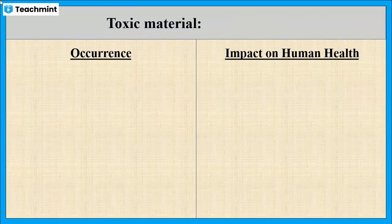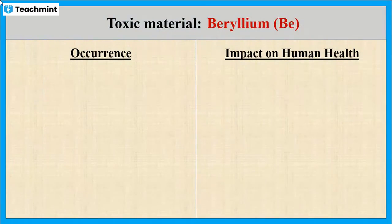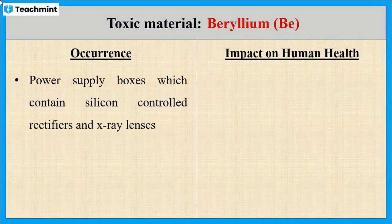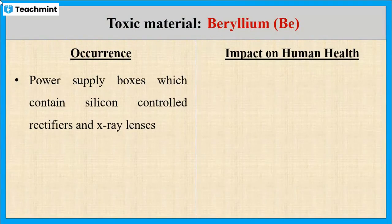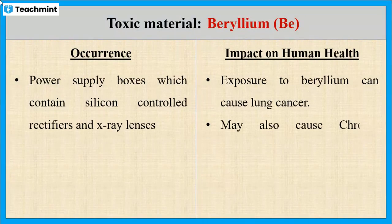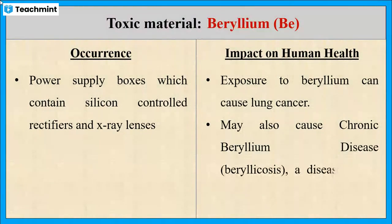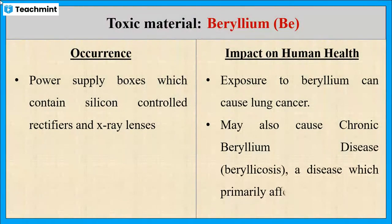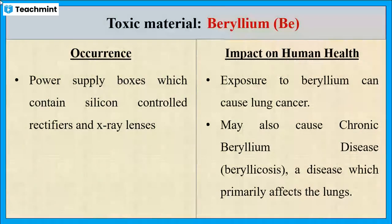The next one is beryllium. It is used in power supply boxes which contain silicon controlled rectifiers and x-ray lenses. Exposure to beryllium can cause lung cancer. Moreover, it may cause beryllicosis, which is a disease that usually affects the lungs.